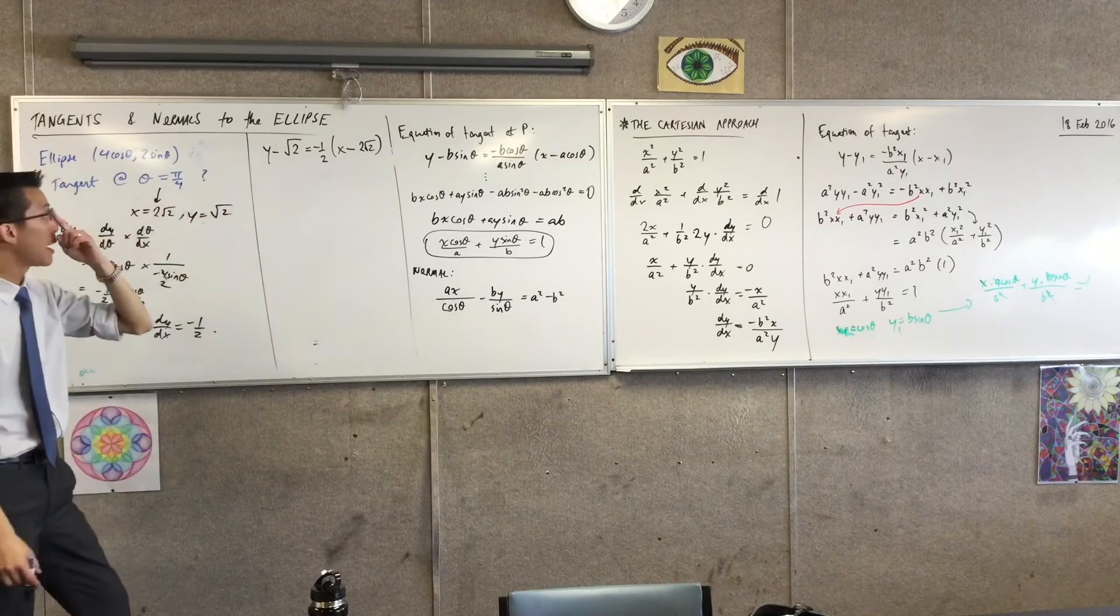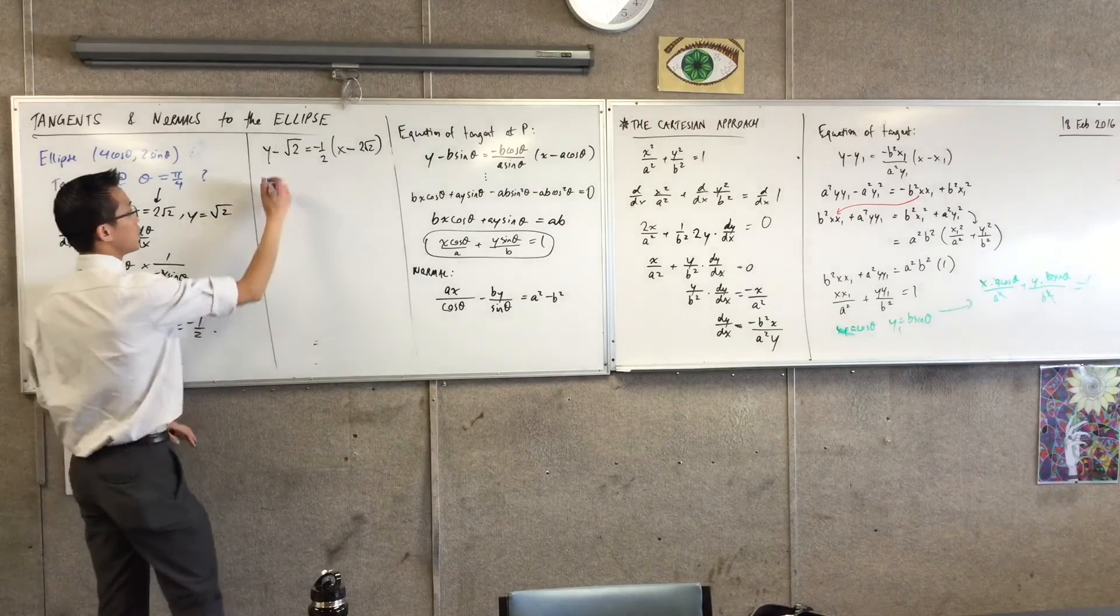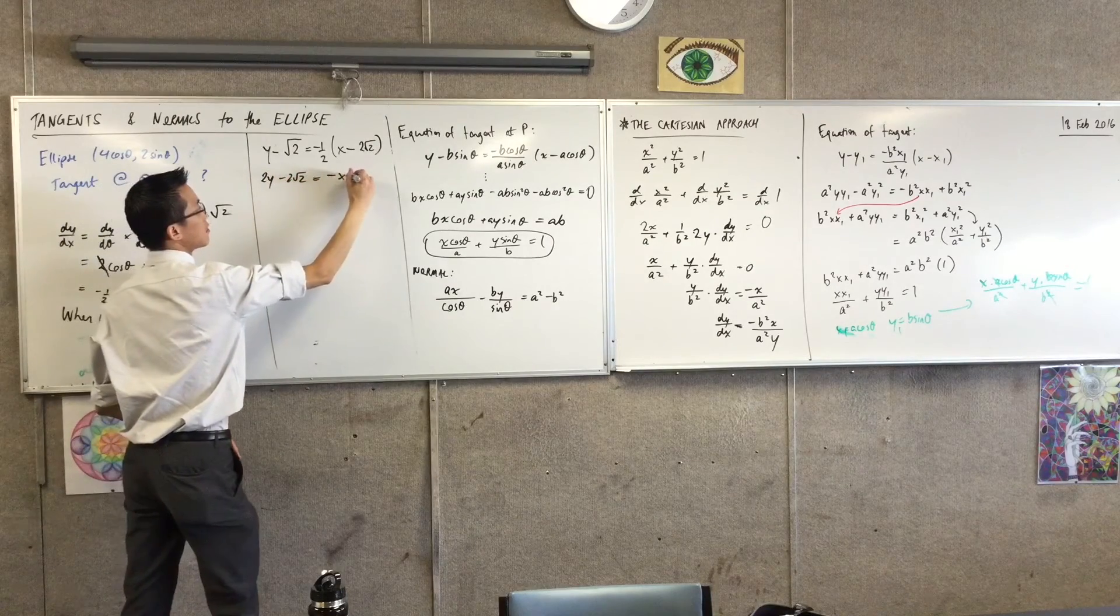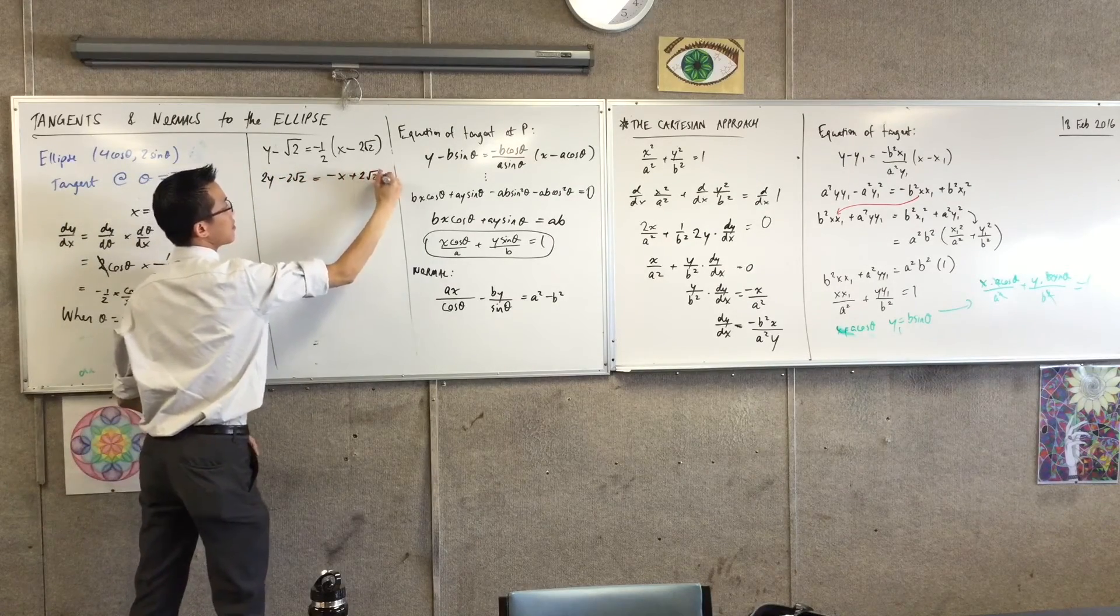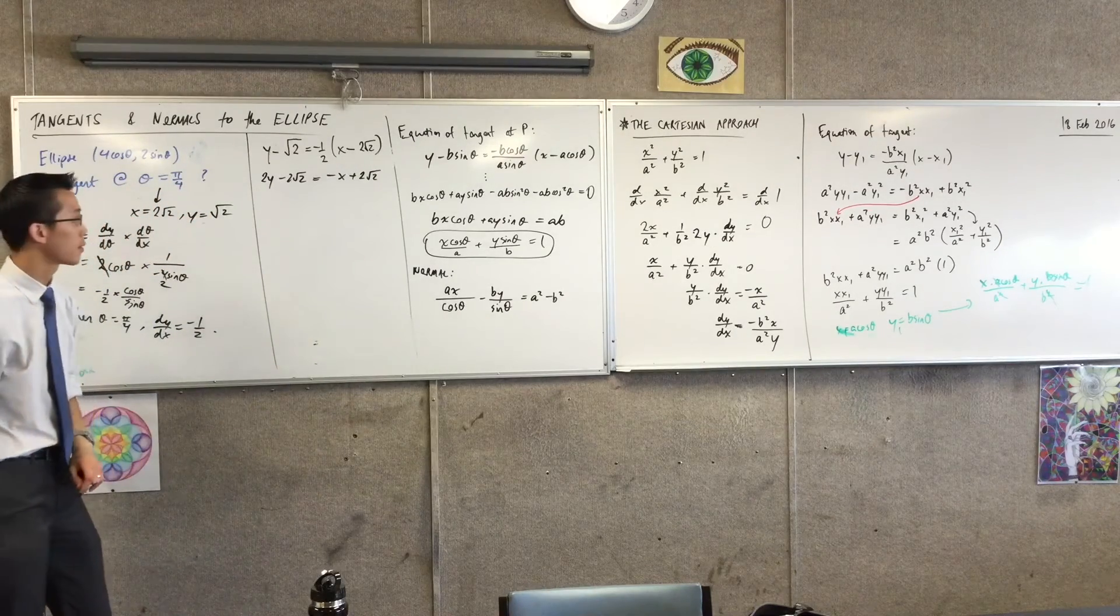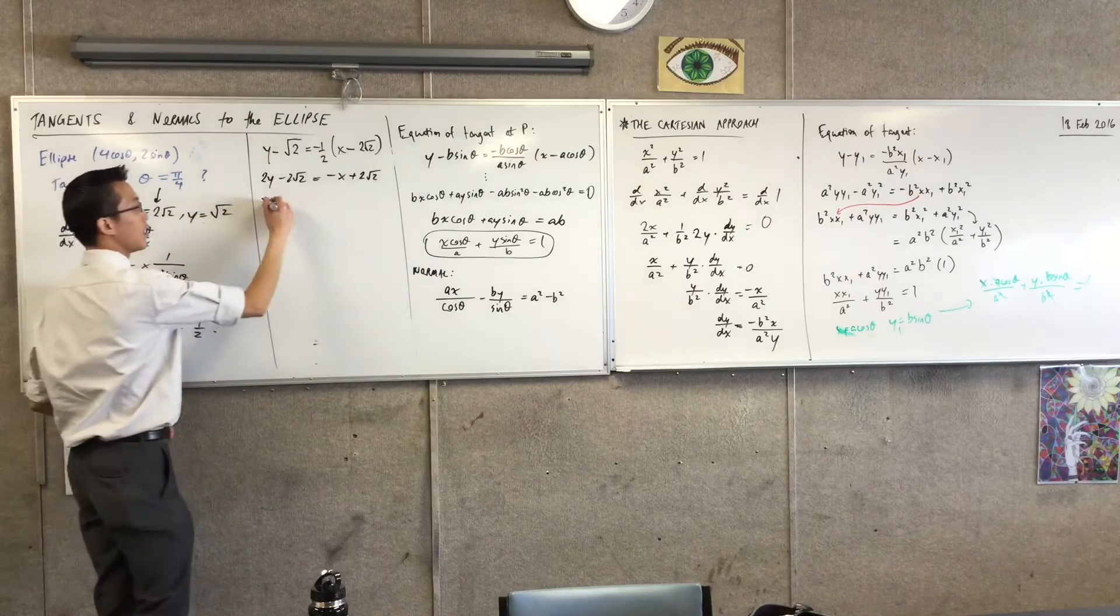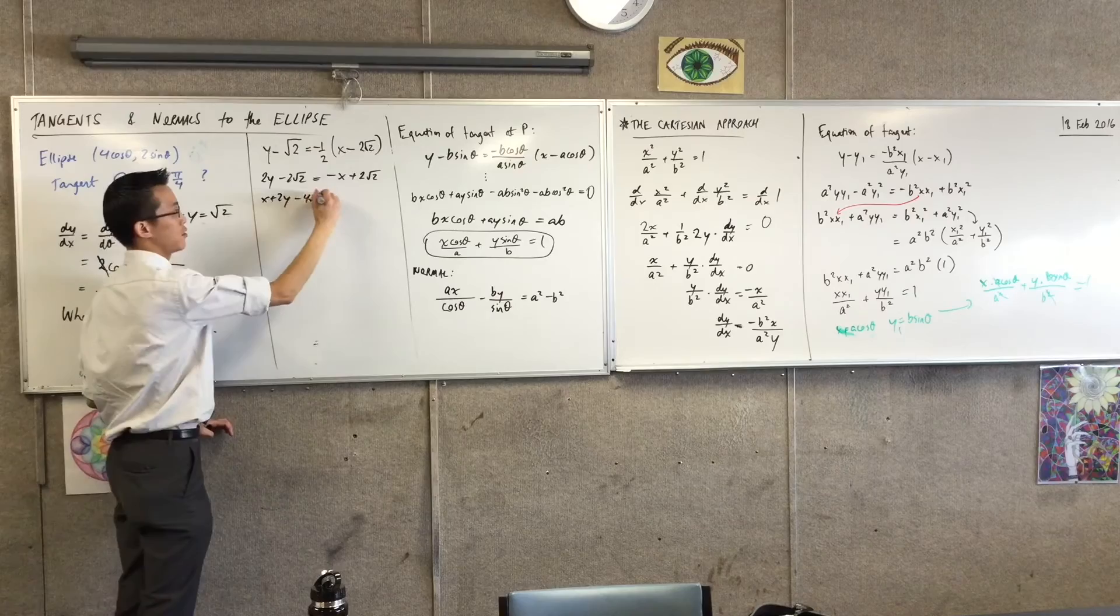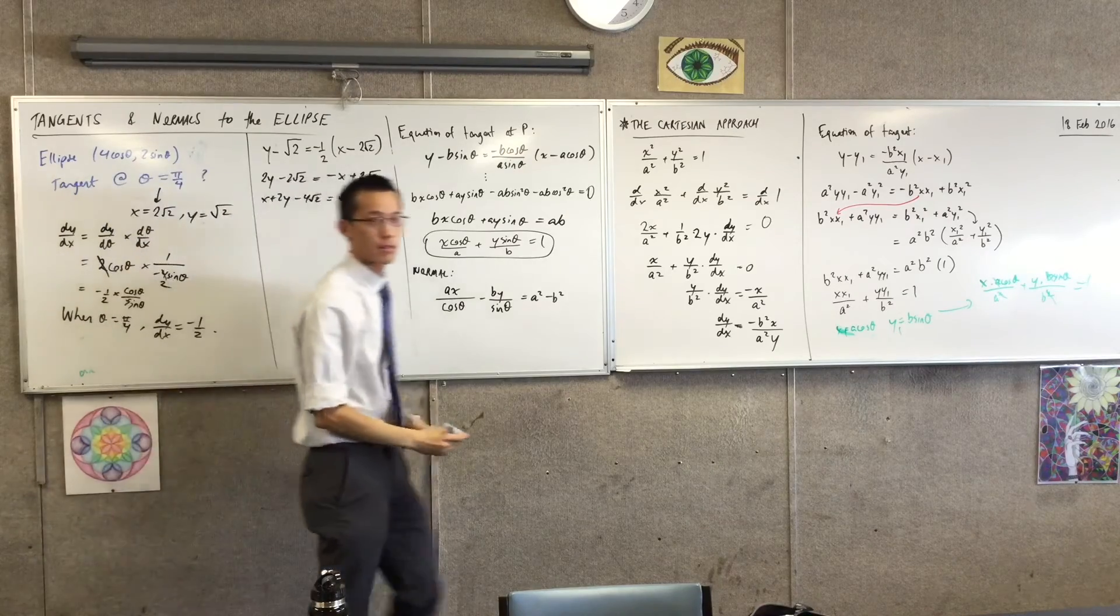I'm going to multiply through by 2, which will give me this. Multiply through and expand, and get everything over here: x plus 2y minus 4 root 2. Done.